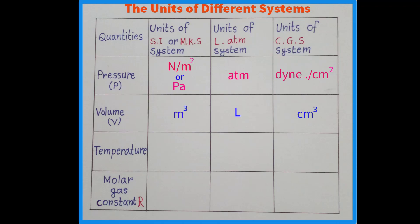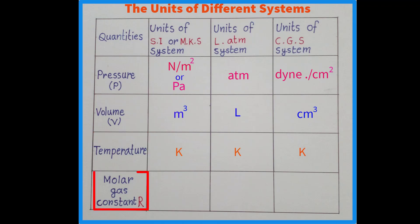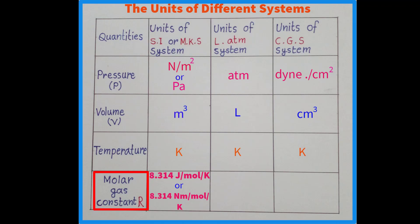There is no reason to worry about temperature, as the Kelvin unit is common for each system. The value of molar gas constant R in the SI system is 8.314 joule per mole per Kelvin, or equivalently 8.314 Newton meter per mole per Kelvin.